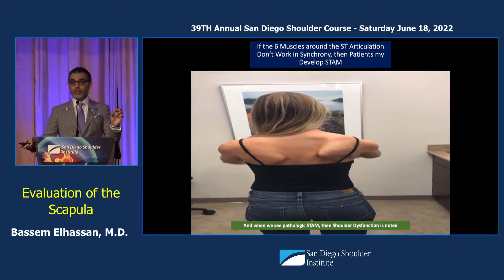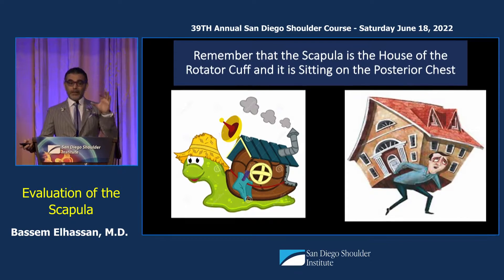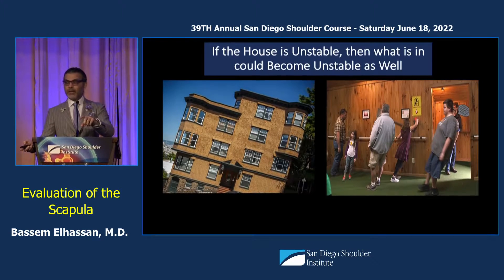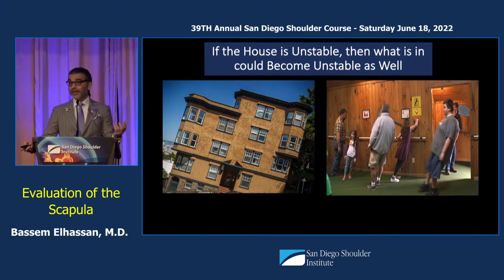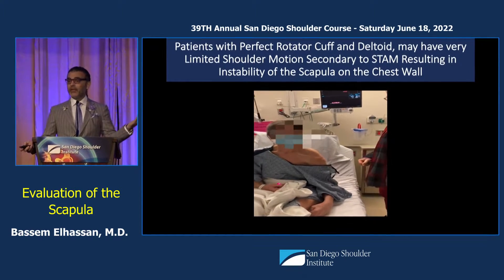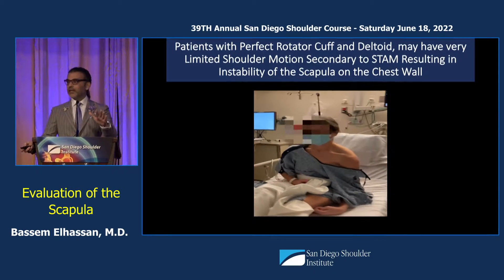If the six muscles around the scapulothoracic joint don't work in synchrony, you're going to have a STAM. Since the scapula sits on the posterior chest and is the house of the rotator cuff, if the scapula becomes unstable, no matter how good the rotator cuff are, they're going to be unstable too. If you're sitting in an unstable house, you're not going to be stable — even if the rotator cuff are perfect and the labrum is normal, you can dislocate your shoulder.